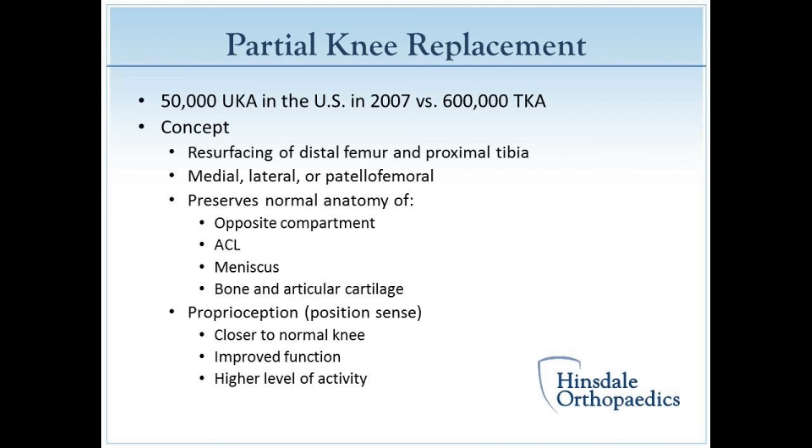Partial knee replacement is becoming more popular. About 50,000 were done in 2007 versus 600,000 total knee replacements. The concept is the same for both: we are resurfacing the bottom of the femur and the top of the tibia. The advantage of partial knee replacement is that it preserves the normal anatomy of the opposite side of the knee — preserving the cruciate ligament, the meniscus on the outside, and all the bone and joint surface cartilage on the unaffected side. This allows for a more normal feeling knee, closer to a normal knee in function.